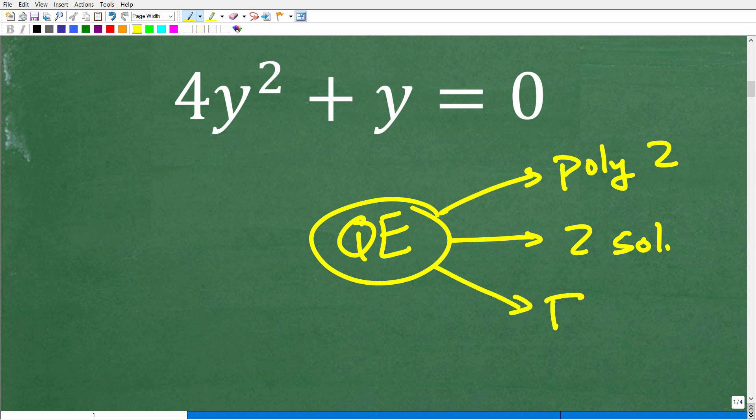Now, sometimes you can solve by factoring. Sometimes you can solve by something called a quadratic formula, right? Now, you don't want to use the quadratic formula if you can factor. Now, sometimes we have real super easy quadratic equations where we can solve by taking the square root of both sides.